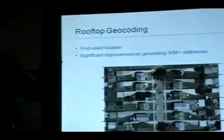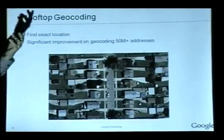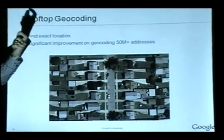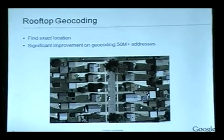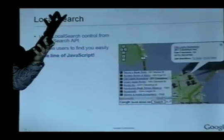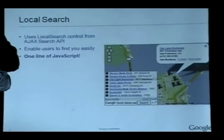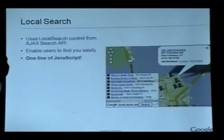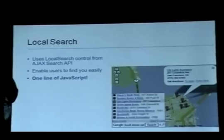If you're developing in JavaScript, there are a number of additional features you have access to. One is Rooftop Geocoding — if you type in an address, you get to find out exactly where the location is, as opposed to interpolating. You get exactly the rooftop where that address is located. You also have access to local search, embedded as part of the API, so people can search on your site and find out the nearest pizza place or bookstore to where your site may be located.